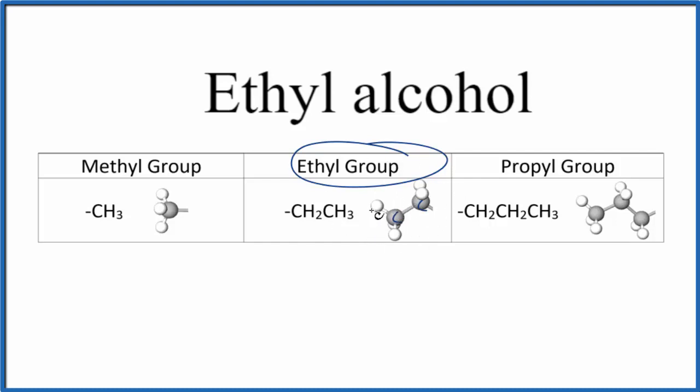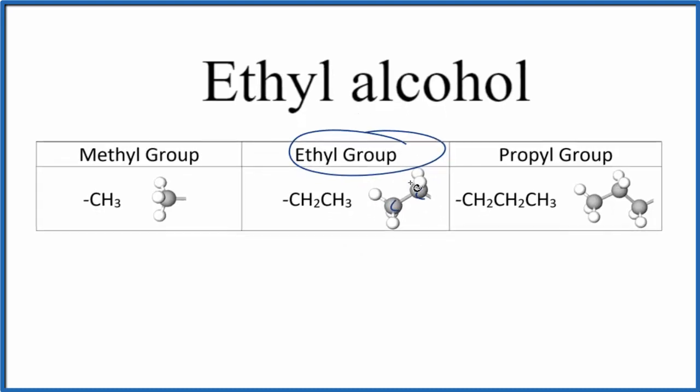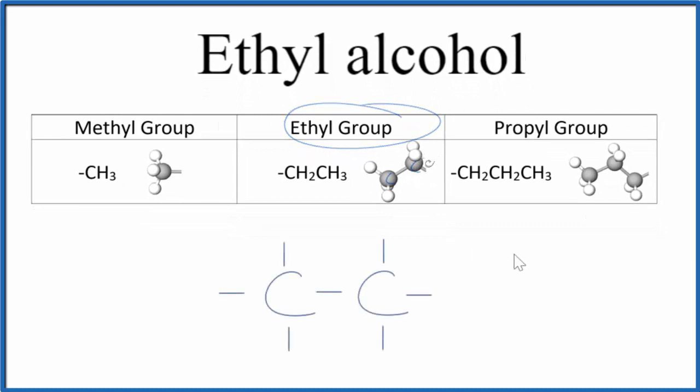Let's write our ethyl group and then we'll put our alcohol group on that, and we'll have the formula for ethyl alcohol. Here's the ethyl group and then we're going to put our OH to make it an alcohol. I'll put that on this end here. So this is the structural formula for ethyl alcohol.